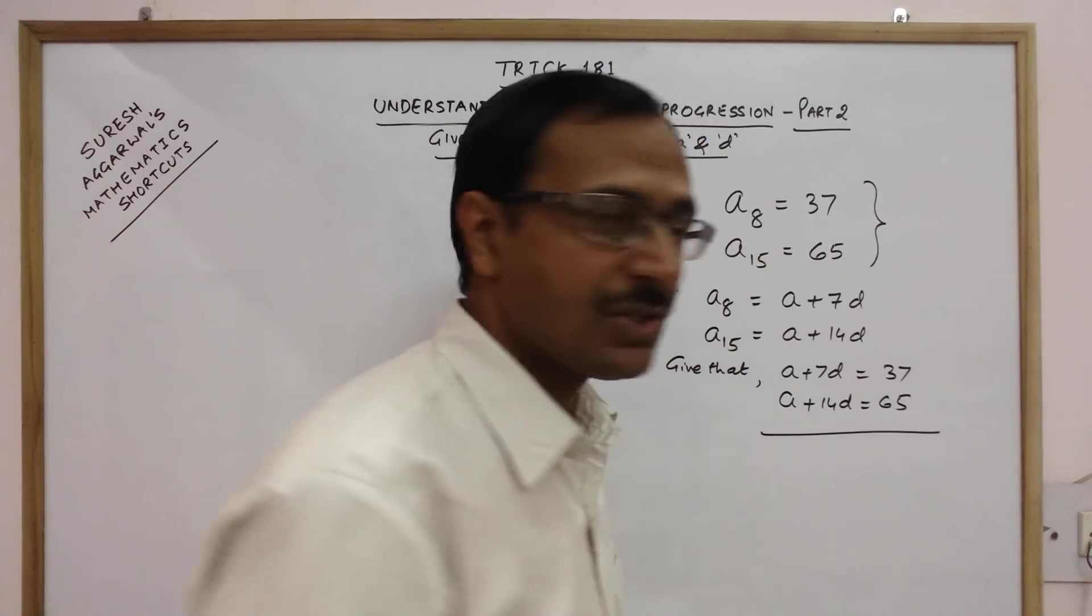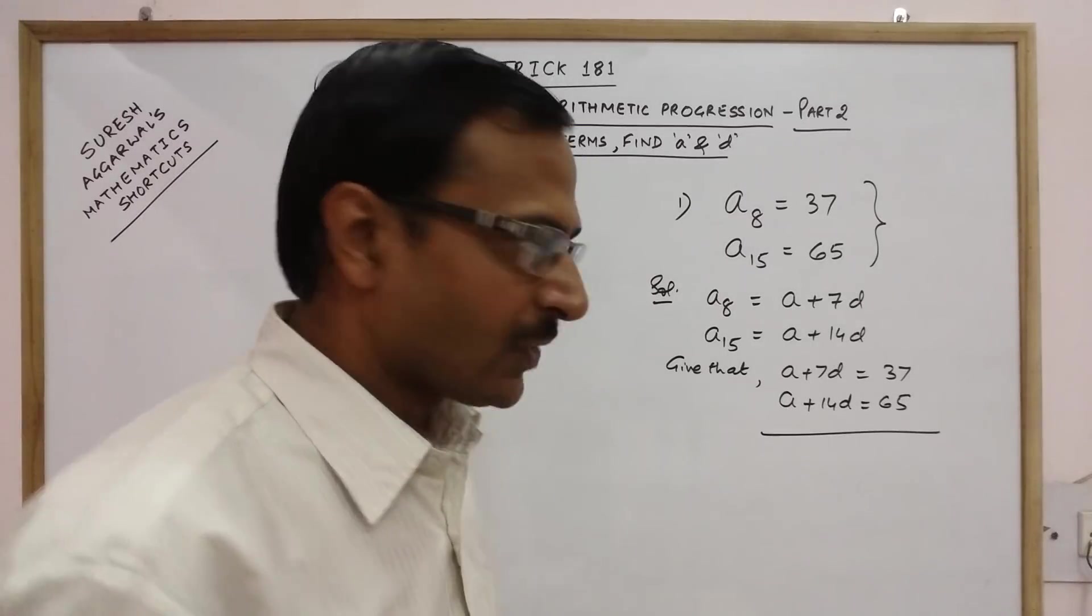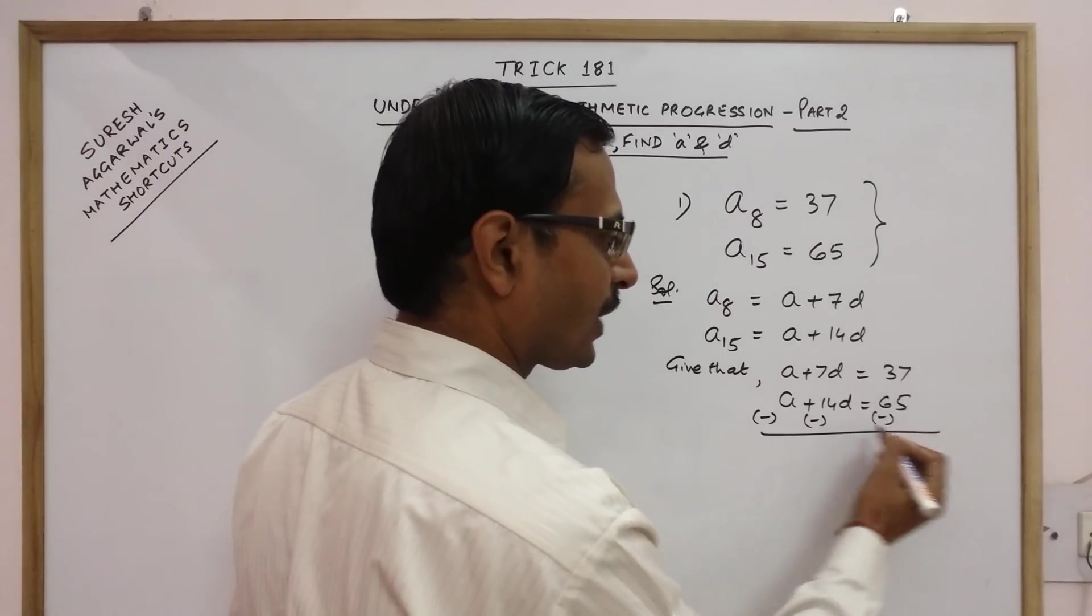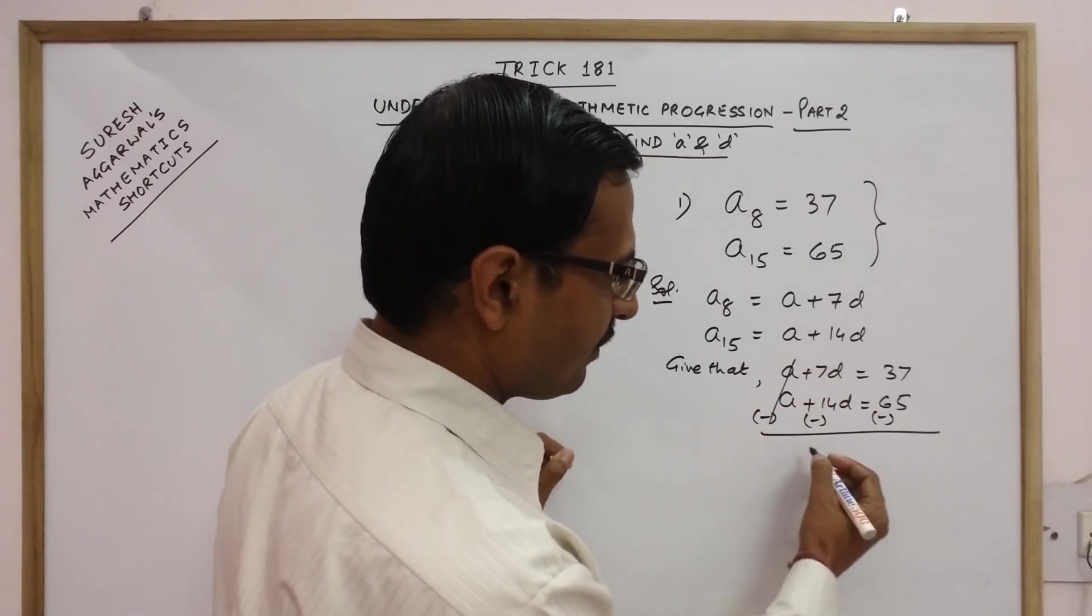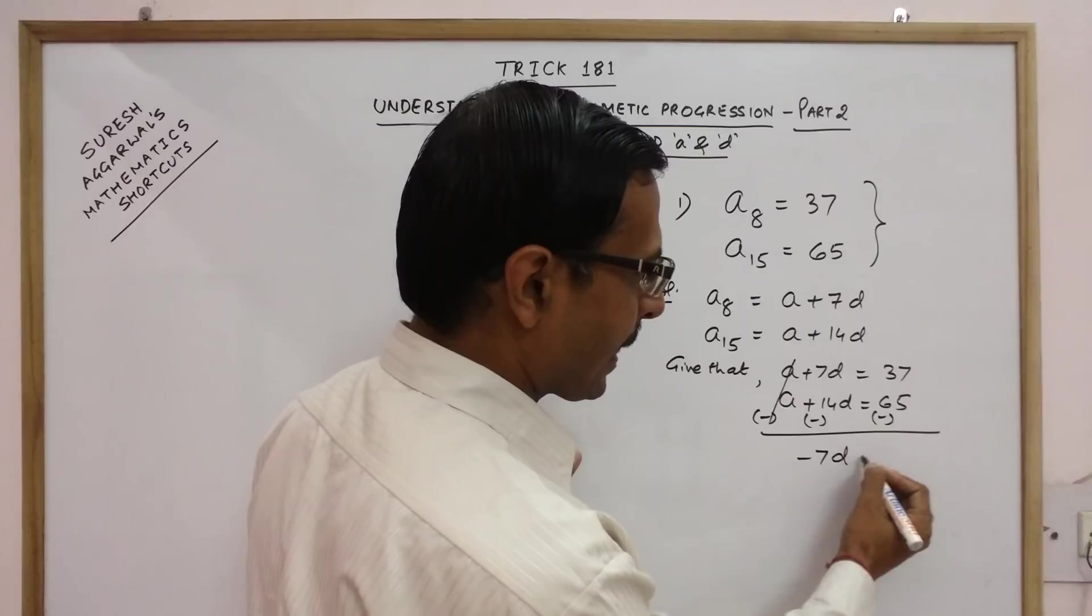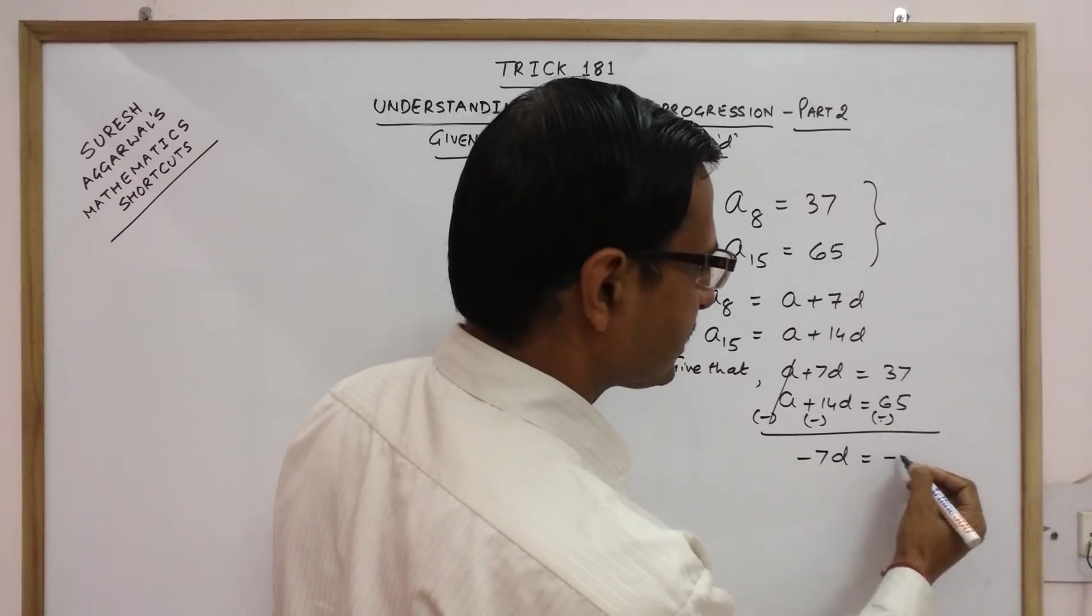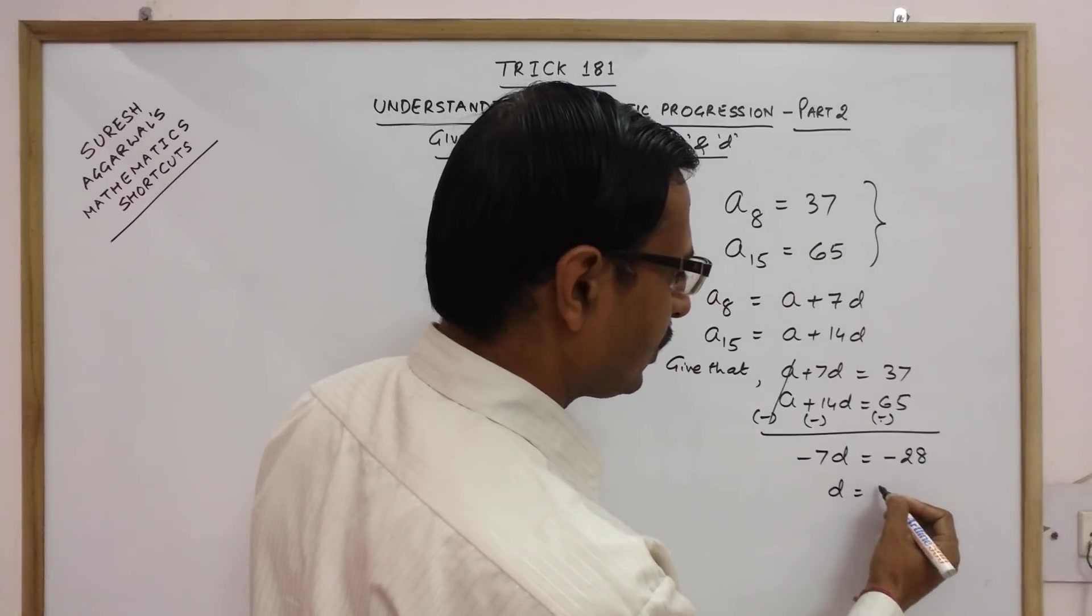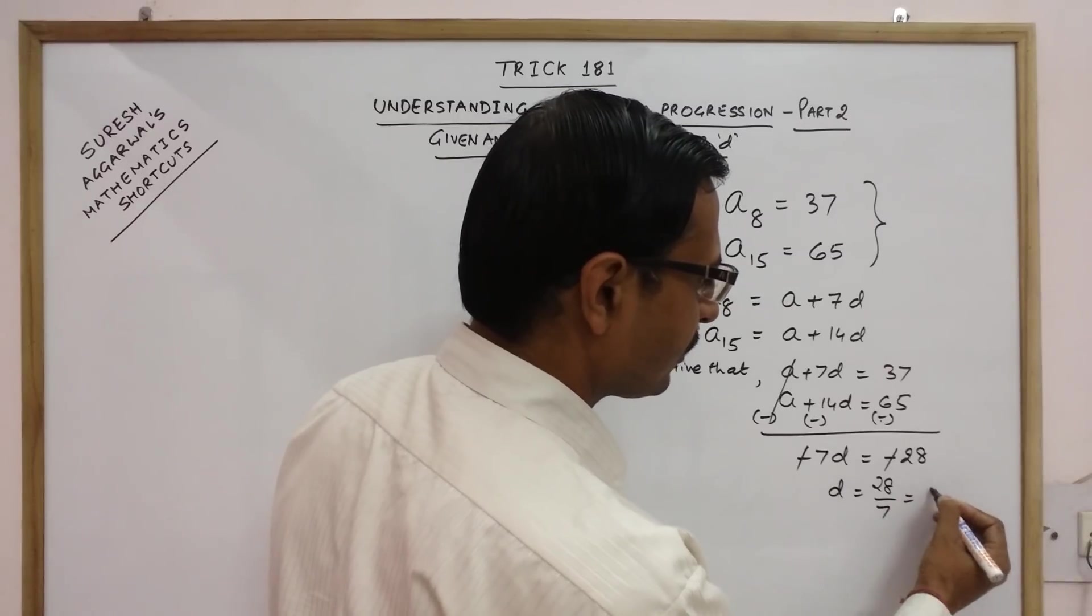We will subtract these two because already the coefficient of A is same. So we will subtract, we will change the sign of the second equation and then cancel A. Then 7D minus 14D will give us minus 7D and 37 minus 65 will give us minus 28. So D will come out to be, minus cancels out and 28 upon 7 that is 4.